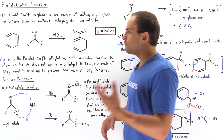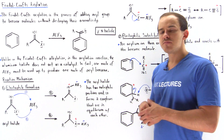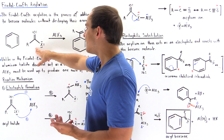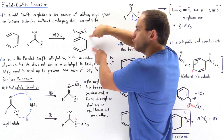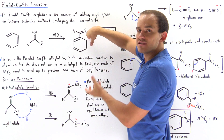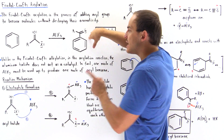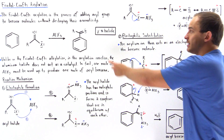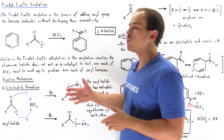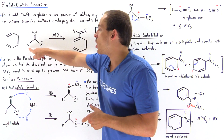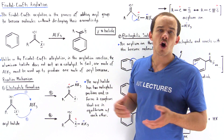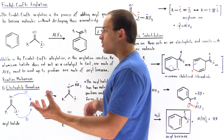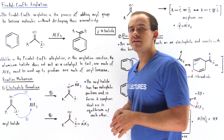The general form of this reaction is shown on the board. We take the benzene molecule and mix it with the acyl halide and the aluminum halide to produce our product, the acyl benzene compound. X simply designates some type of halide — it could be chloride, bromide, and so forth. R designates our arbitrary hydrocarbon group; it could be a methyl, ethyl, propyl group, and so forth.